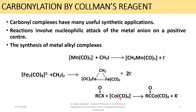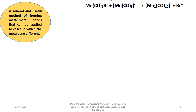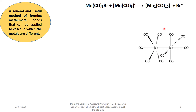Another example: an acyl halide reacts with a carbonylate anion complex, forming an acyl derivative. This is a general and useful method of forming metal-metal bonds that can be applied to cases involving different metals. For similar metal atoms — for example, pentacarbonyl manganese bromide reacts with pentacarbonyl manganese ion, forming dodecacarbonyl dimanganese. The structure of this carbonyl complex shows the metal-metal bond between the two manganese atoms.